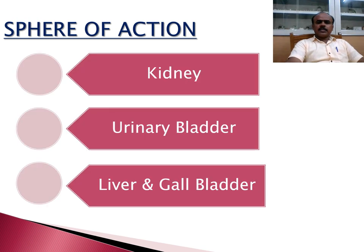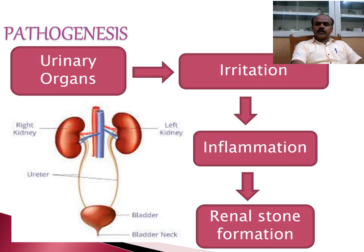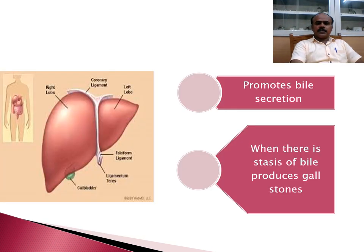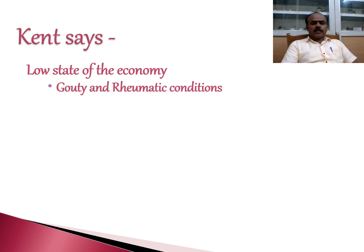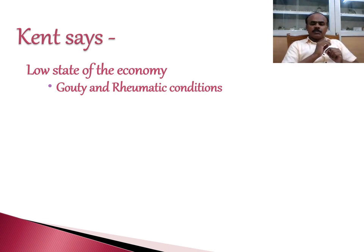It acts mainly on the kidneys, the urinary bladder, liver, and the gallbladder. It acts on the urinary organs producing renal stones, and promotes bile secretion — when there is stasis of the bile it produces gallstones. Kent says that Berberis Vulgaris is a remedy indicated for people with low state of vitality, having rheumatic and gouty diathesis. In gout, the gouty nodosities which form in the small joints fail to develop because of the low vitality that Berberis Vulgaris is associated with.